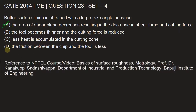Option D states that friction between the chip and the tool is less — that is true, but option A is more correct. To learn more about surface roughness and surface finishing, you can refer to the NPTEL video on basics of surface roughness from the course on metrology.